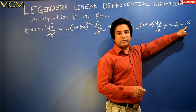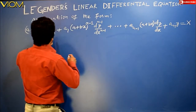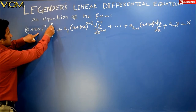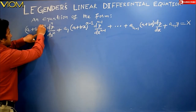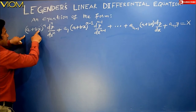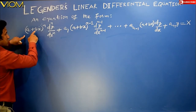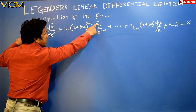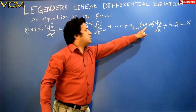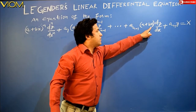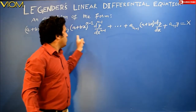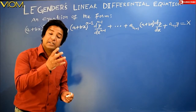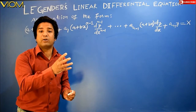This is a linear differential equation with variable coefficients. I can say this because in front of each differential coefficient, it contains x as a variable — in front of the differential coefficient of order n, of order n−1, and in front of dy/dx. So this whole differential equation is a linear differential equation with variable coefficients.